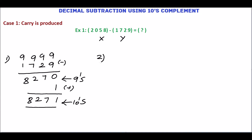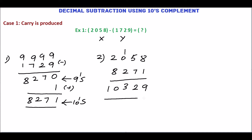In step 2, add x and the 10's complement of y, which is 8271. 8 plus 1 is 9. 5 plus 7 is 12, carry 1. 1 plus 0 plus 2 is 3. 2 plus 8 is 10. In step 2, carry is produced. Discard this carry. So the final answer is 329 base 10.